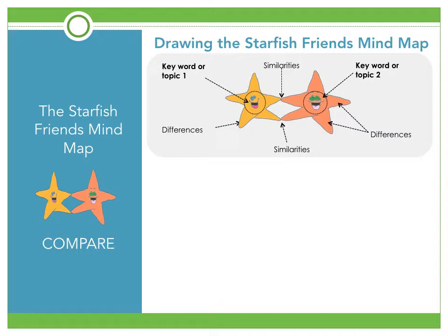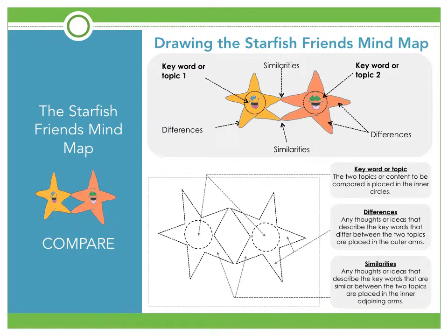Let's take a look at how this will be drawn in your books or for the learners. It's two starfish: where there are similarities the arms join, and where they are different the arms go their separate ways. If there are more than two similarities, that's fine — you simply add a new arm between the two. Let's take a look at a practical example.